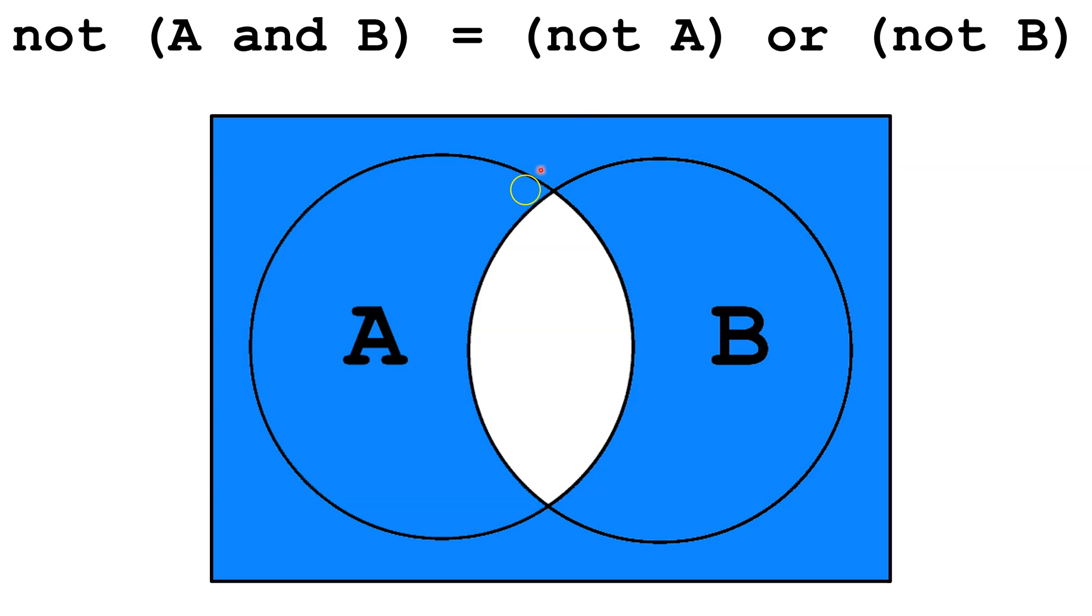We can look at the equivalent. This area is Not A. And this area is Not B. And this area is both Not A and Not B. So the only area that isn't Not A or Not B is this area here. Everything else is either Not A or Not B.